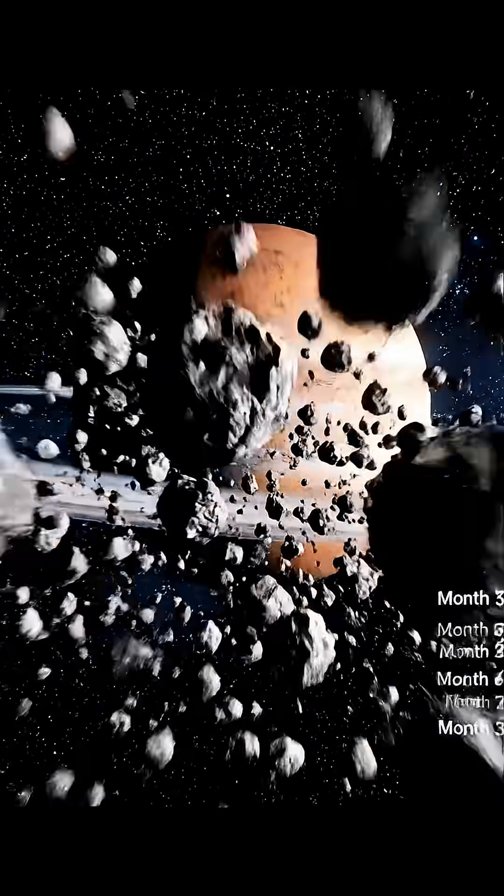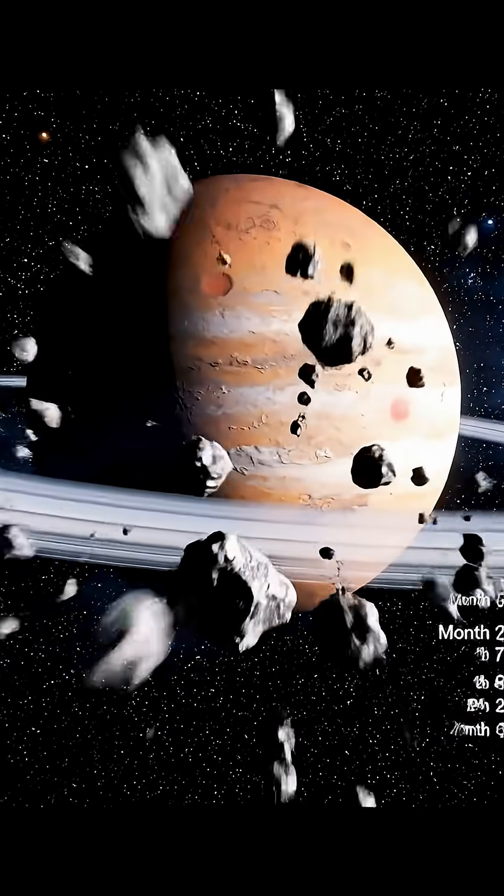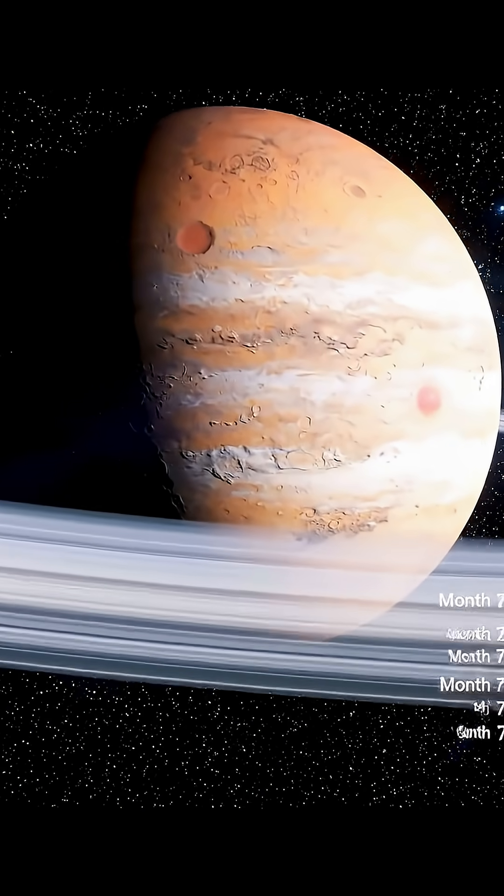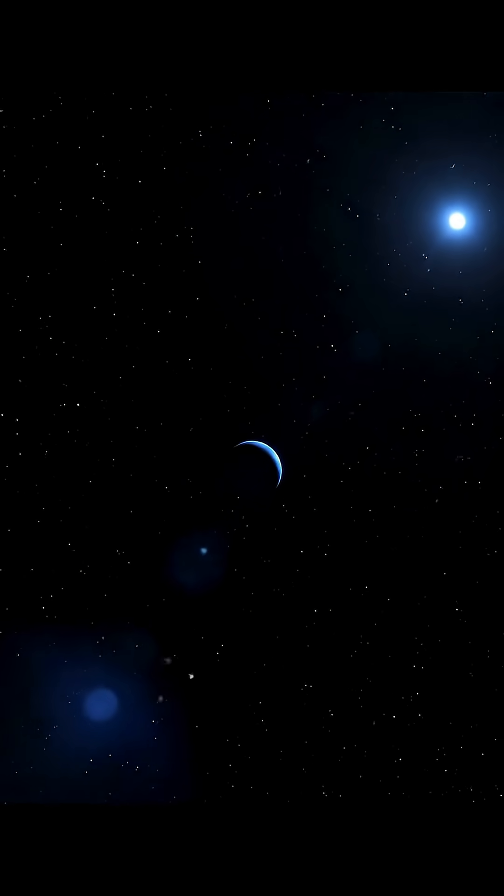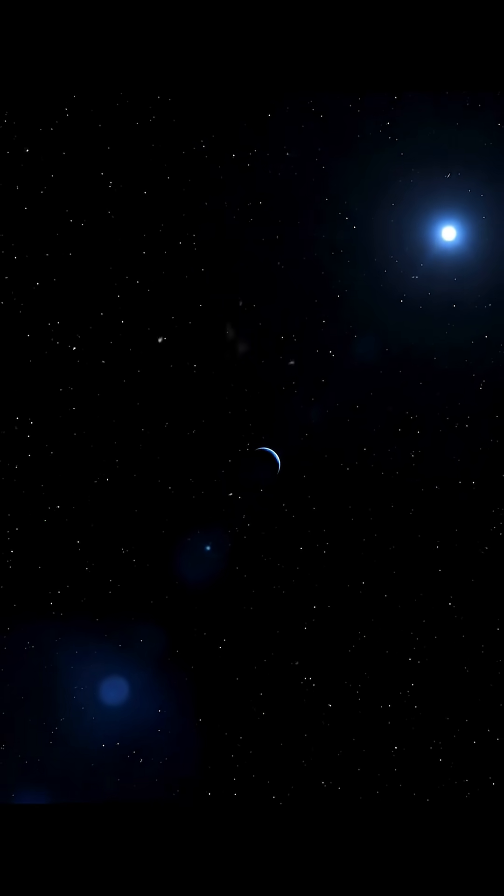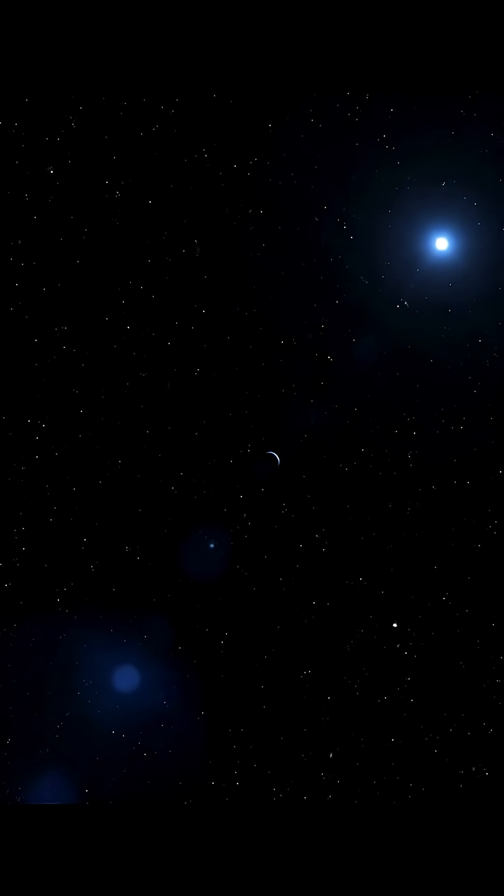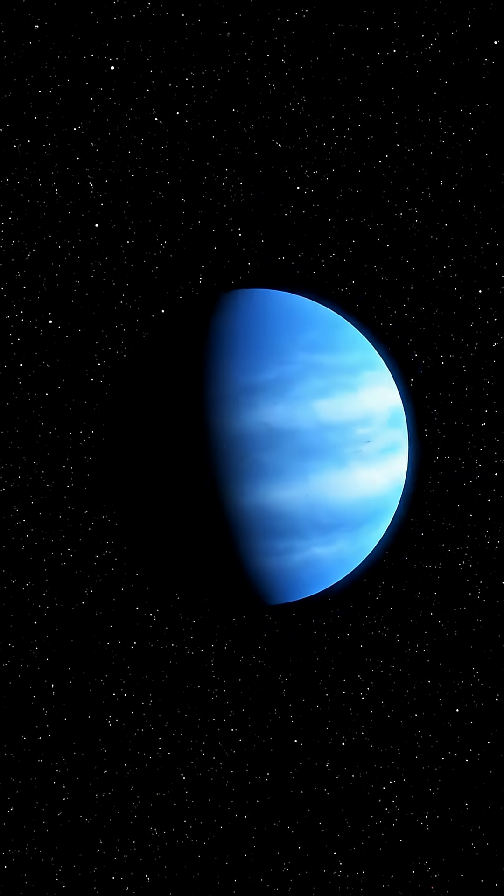It takes spacecraft traveling at 36,000 miles per hour over six months just to reach Mars, and that's our closest planetary neighbor. Neptune orbits 2.8 billion miles from the sun, so far away that sunlight takes over four hours to reach it. But the planets are just the beginning.